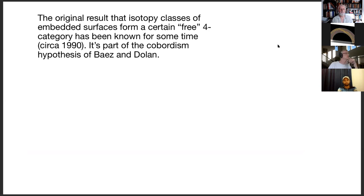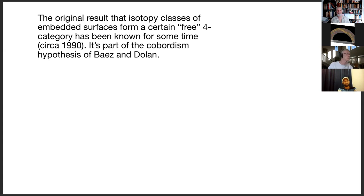The original result that isotopy classes of embedded surfaces form a certain three-four category has been known since circa 1990. At around that time, people realized that the pre-braided monoidal category on one self-dual object generator was the category of tangles, and were looking for a corresponding statement about the category of two tangles. That statement was formulated in John Fisher's PhD thesis. There was a gap patched by Baez and Langford, and then Baez and Dolan formulated the tangle hypothesis and the cobordism hypothesis.